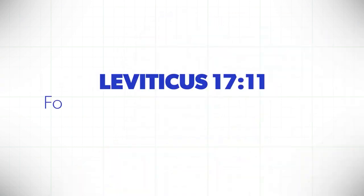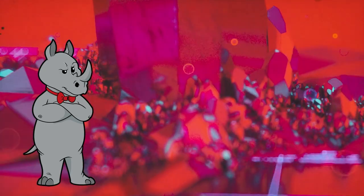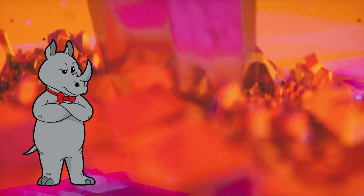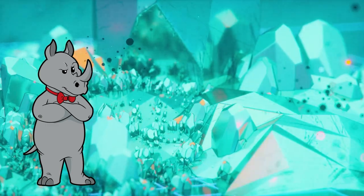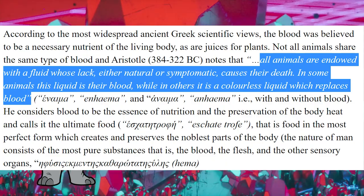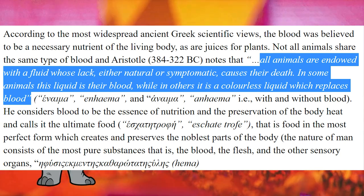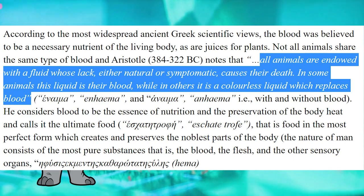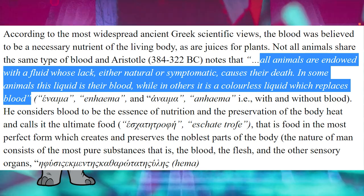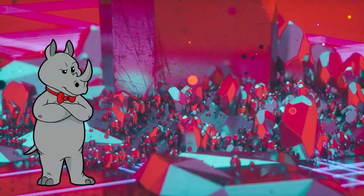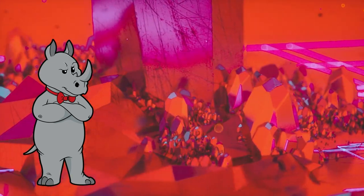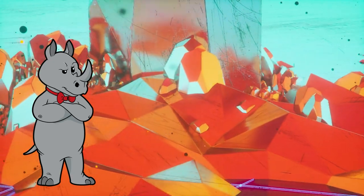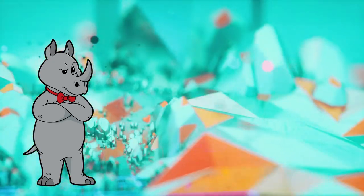For instance, the Bible mentioned in the first five books that the life of the flesh is in the blood. Yes. And the book of Leviticus was estimated to have been written between 538 and 332 BCE. Do you know what overlaps with that? Aristotle's writings on blood. All animals are endowed with the fluid whose lack, either natural or symptomatic, causes their death. In some animals, this liquid is their blood, while in others it is a colorless liquid which replaces blood. The ancient Greeks considered blood to be a necessary nutrient for living bodies. Now, you have two options here. Either blood being important to life is not a profound scientific discovery that humans of the time were incapable of making without supernatural intervention, or else the ancient Greeks had supernatural intervention to give them this discovery as well. Which do you prefer?